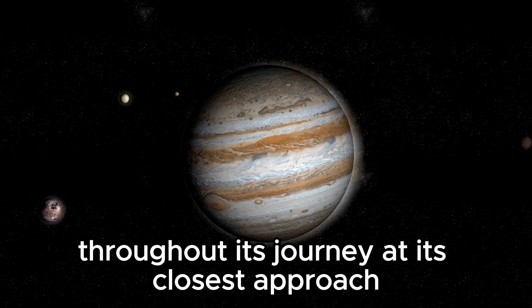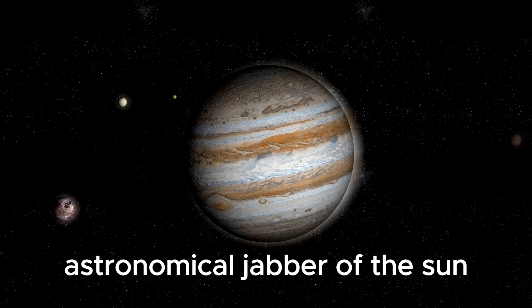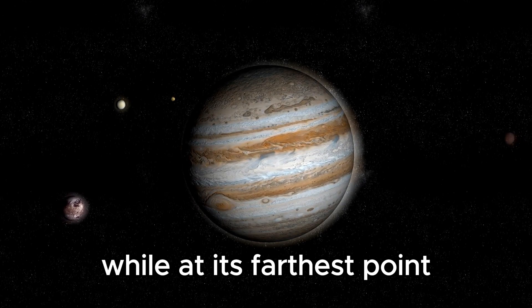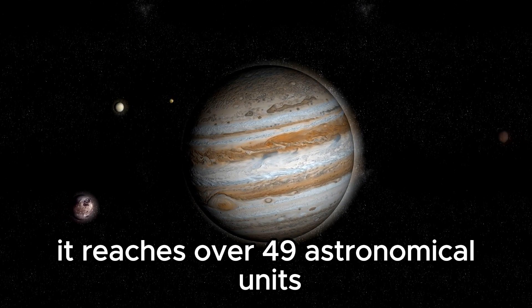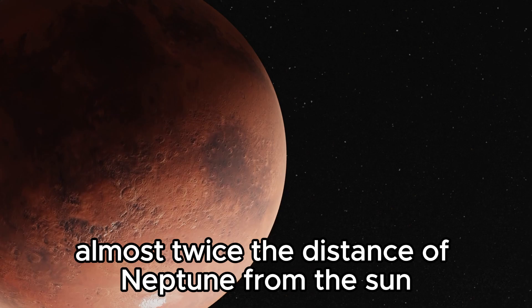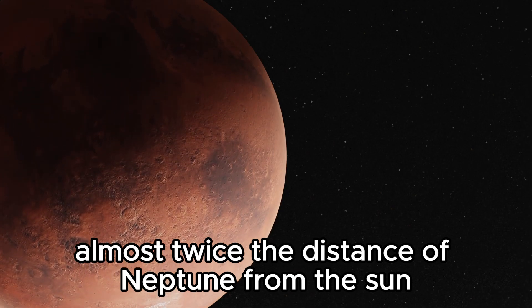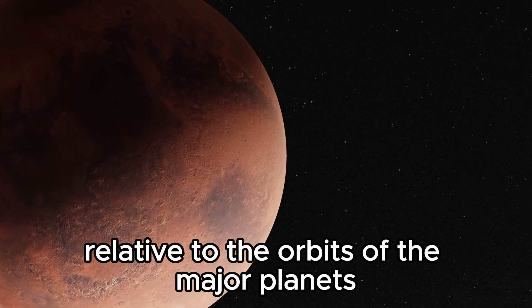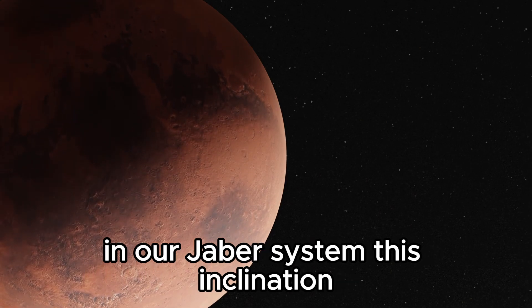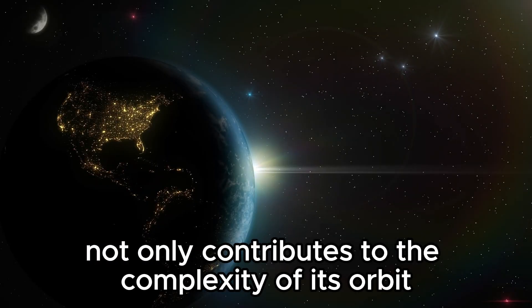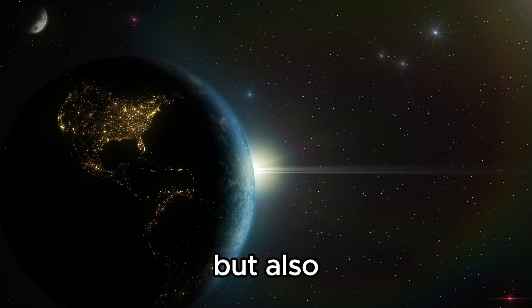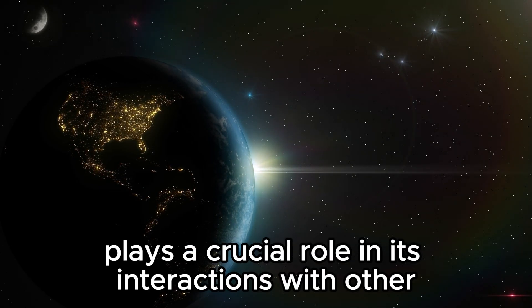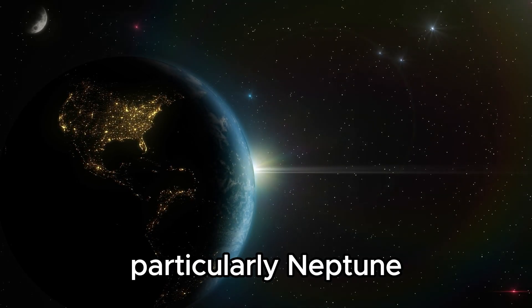At its closest approach, Pluto comes within about 30 astronomical units of the Sun, while at its farthest point, it reaches over 49 astronomical units, almost twice the distance of Neptune from the Sun. Moreover, Pluto's orbit is inclined at an angle relative to the orbits of the major planets in our solar system. This inclination not only contributes to the complexity of its orbit, but also plays a crucial role in its interactions with other celestial bodies, particularly Neptune.